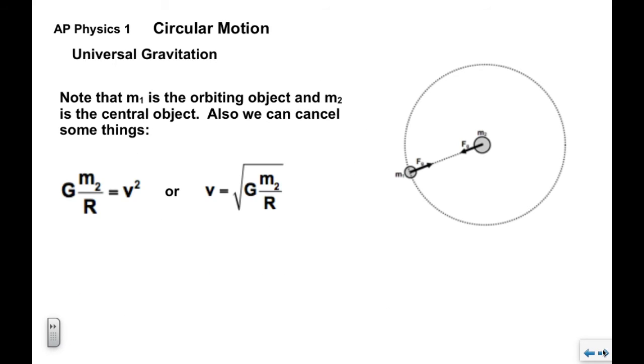Now we could clean it up a little bit. The M1 cancels on both sides, one of the R's goes away from this side, and we get this relationship here, or we could take the square root and say that the velocity of the orbiting object M1 equals big G times M2 over R.